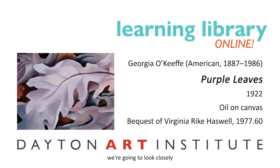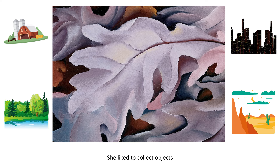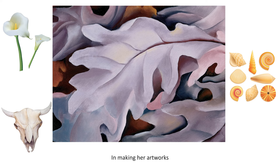In this edition, we're going to look closely at a painting by Georgia O'Keeffe called Purple Leaves. She was inspired by what she observed in the world around her, whether she was on a farm, in the city, at a lake, or in the desert. She liked to collect objects like flowers, seashells, and animal bones. In making her artworks, she would take the time to look at her objects closely.